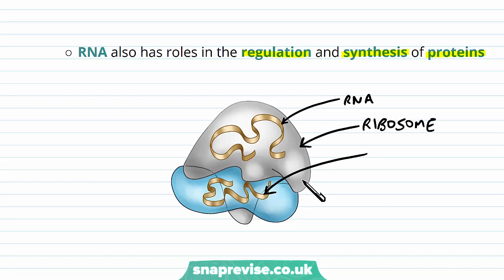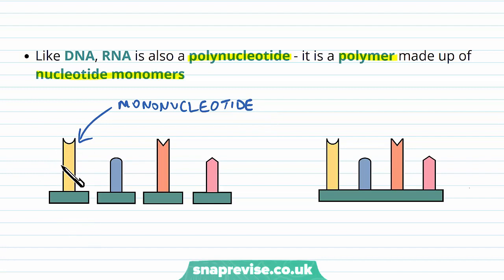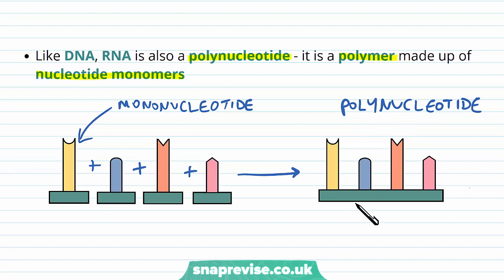DNA and RNA do fall into the same family, and therefore they have some similar features. DNA and RNA are both polynucleotides, which means that it's a polymer of lots and lots of nucleotide monomers joined together. Individual nucleotides — or mononucleotides — refer to a single nucleotide just on its own. As they lie separately they're just mononucleotides, but if they were all added together into a chain via condensation reactions, we would end up with one single chain of nucleotides known as a polynucleotide. Both DNA and RNA contain polynucleotides.